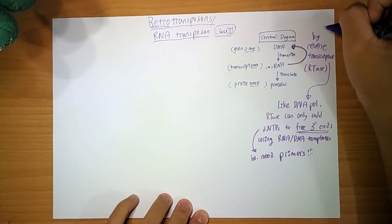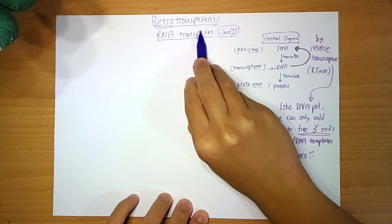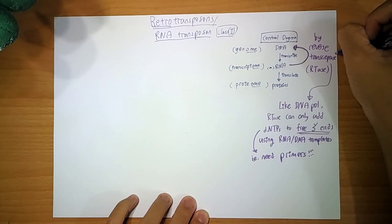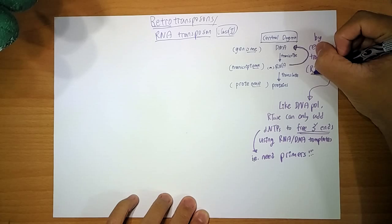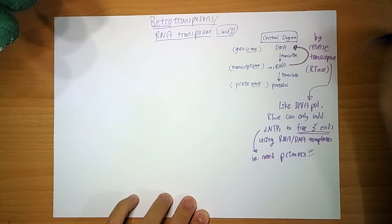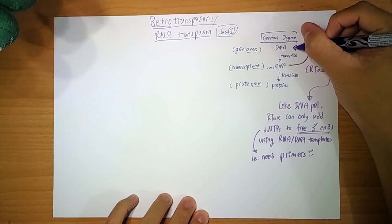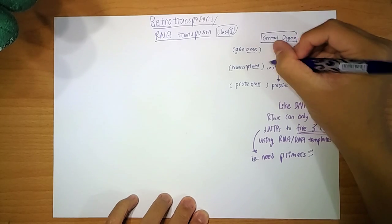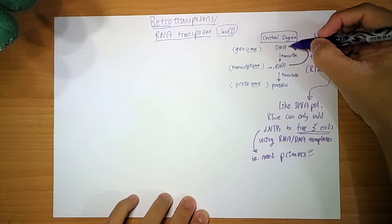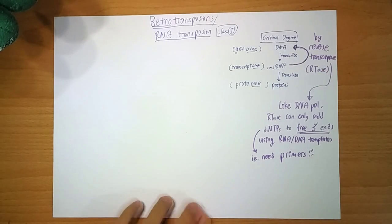This is a normal flow of genetic information. Whereas for retrotransposons, they have an enzyme called reverse transcriptase. We will call it RTAs here. And it will reverse transcribe RNA into DNA. More specifically, single-stranded RNA into double-stranded DNA.